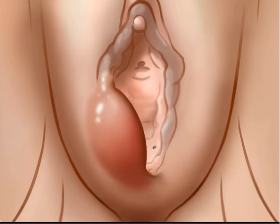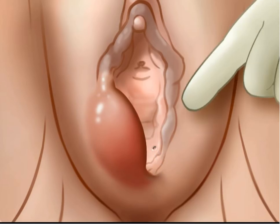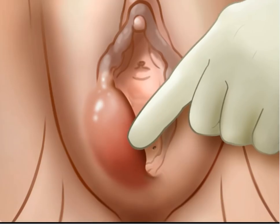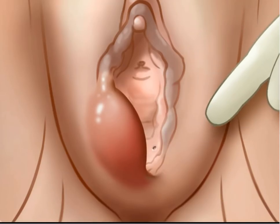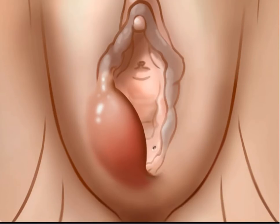Classically, a fluctuant mass is found either on the right or left side of the introitus, external to the hymenal ring, and at the lower aspect of the vulva.